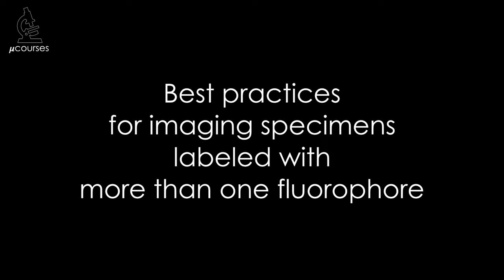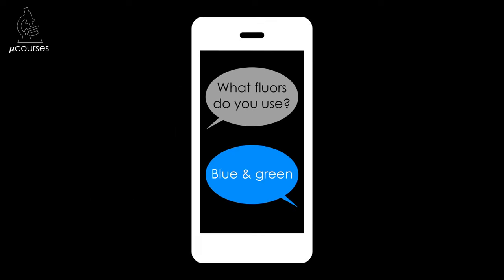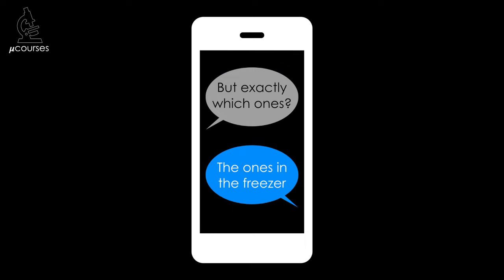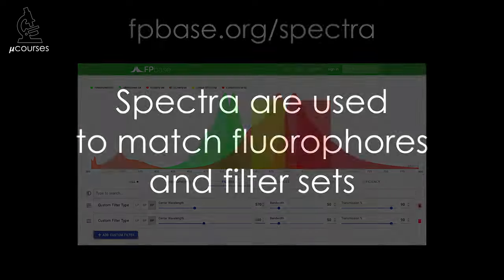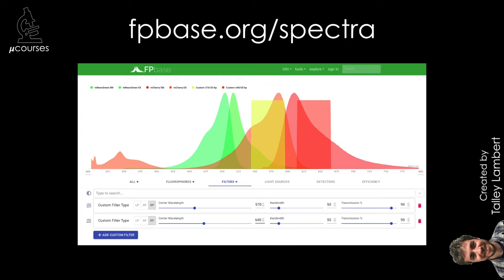In this microcourse, I'll talk about best practices for imaging specimens that are labeled with more than one fluorophore. In order to design an experiment that uses more than one fluorophore in the same sample, you must know the exact fluorophores you're using. This is because the only way to determine the appropriate filter set to use with a fluorophore is to examine the spectra for both the fluorophore and the filter set, as described in part one. And in order to use tools like fpbase.org to generate accurate spectra, you must know the exact fluorophores and filter sets that you're using.